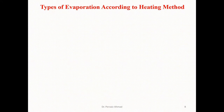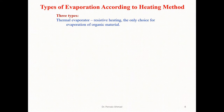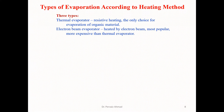We have classified the evaporation techniques — that is, the types of evaporation — according to the heating methods. According to the heating methods, there exist three basic types of evaporation: thermal evaporation, in which we utilize resistive heating and it is the only choice for evaporation of organic materials; and electron beam evaporation, in which heating is done by electron beams. It is the most popular technique but more expensive than thermal evaporation.